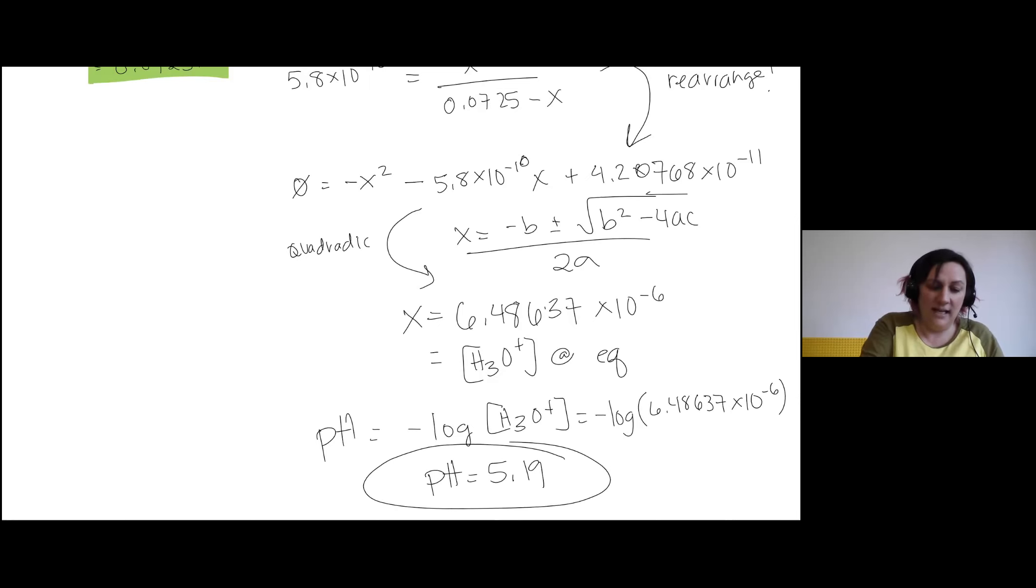And that is the pH that we expect at equilibrium. And so we need to choose an indicator that has an endpoint around pH 5.